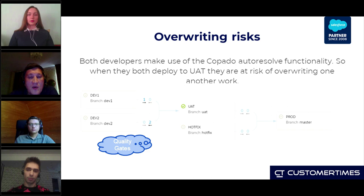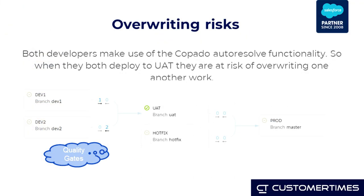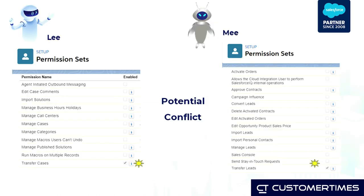This is how a Copado pipeline looks like. We can see that one developer is living in the Dev1 sandbox, another one is in Dev2. The first one is not going to use Copado Quality Gates, while the other one is going to use Copado Quality Gates. According to the requirements, Mi is going to develop a permission set with the functionality of Transfer Leads.